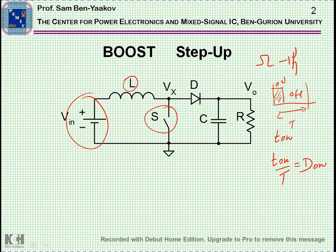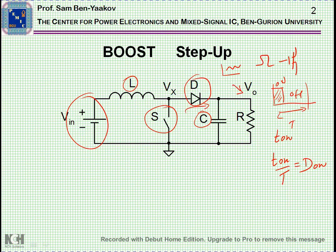We then have a diode which is used to pass the current this way and block the current the other way. We have a capacitor, which is a filter capacitor, the purpose of which is to attenuate the ripple on the voltage developing at the output. And we have a resistor which represents the load.